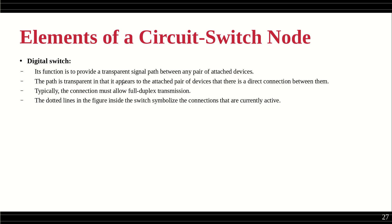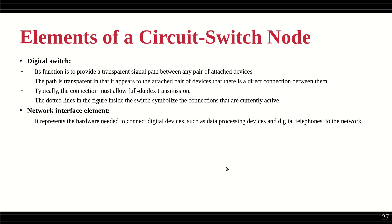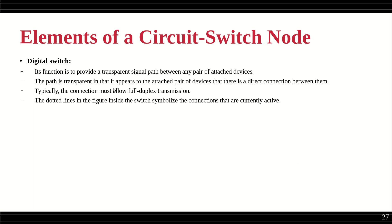The path is transparent in that it appears to the attached pair of devices that there is a direct connection between them, even if intermediate switches are involved. For example, devices C and D may appear directly connected, but in reality the connection goes through intermediate switches — this complexity is hidden from the user. The connection must also allow full-duplex transmission, meaning two-way communication happening simultaneously.